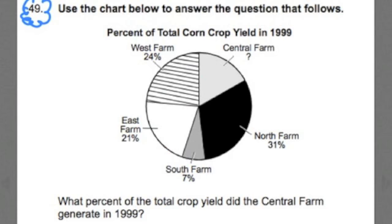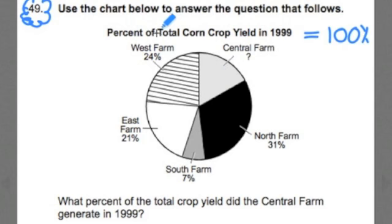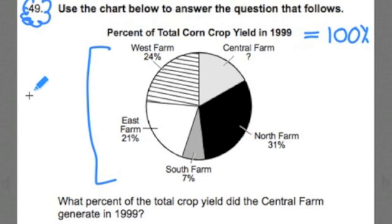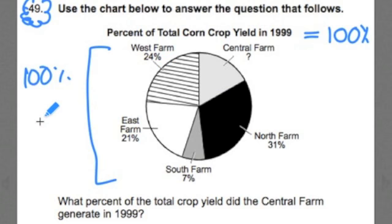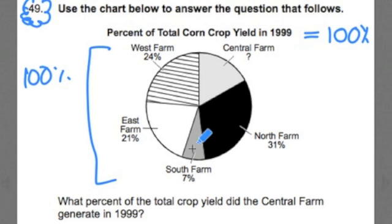The big idea here is when we're dealing with total, this represents all, or 100% of the corn crop. Whenever you see a pie chart like this, you want to think that when you add up all the parts, they're always going to add up to 100%. Pie charts are dead giveaways that you're dealing with fractions, decimals, percents — it always has to do with part-to-whole relationships. So I know these all have to add up to 100%.